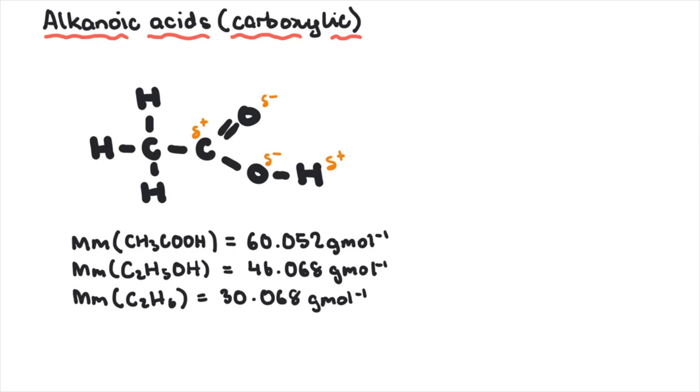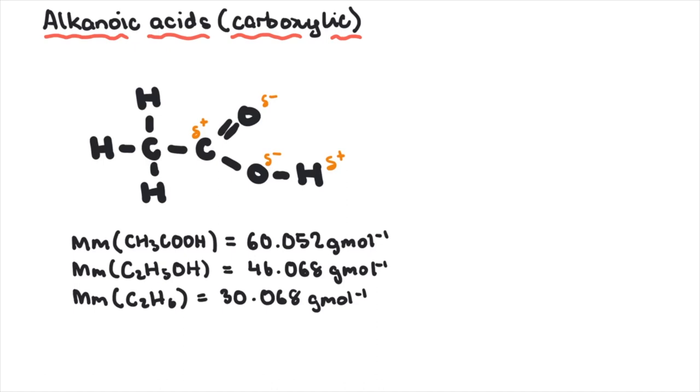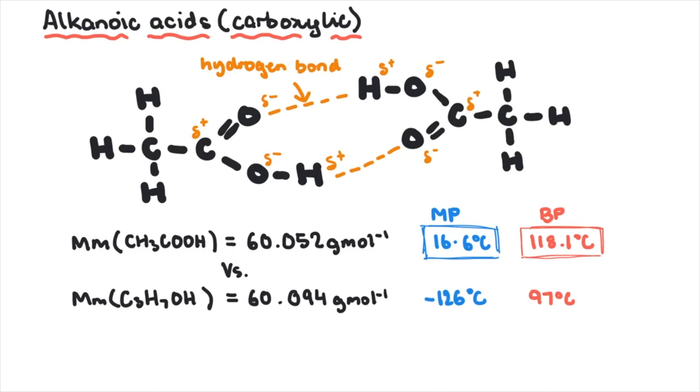When an alkanol and an alkanoic acid of the same molar weight are compared, it's the alkanoic acid that has a higher melting point or boiling point, and this is mainly due to the more extensive hydrogen bonding between alkanoic acid molecules.